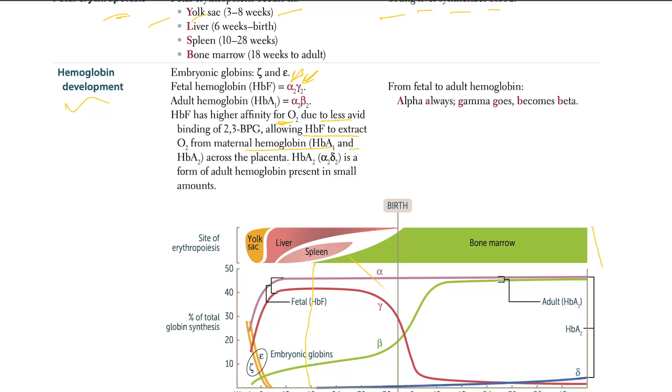But HbA2, which is alpha 2, delta 2, is the form of adult hemoglobin present in small amounts. So majority, we have HbA1, remember, what do we check in glucose, HbA1C levels. So HbA1 is majority, and very minority, we have the HbA2 in adults. In fetus, we just have the alpha 2, gamma 2.